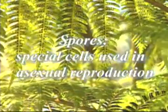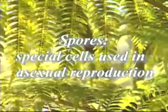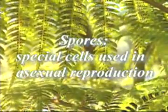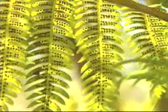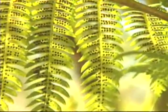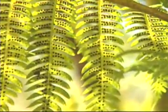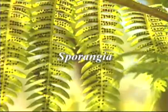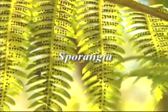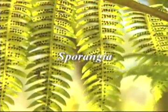Spores are special cells used in asexual reproduction, which do not have to be fertilized by another cell to create offspring. Ferns make spores on the undersides of their leaves in organs called sporangia, which cluster together to form the black dot-shaped structures seen here.